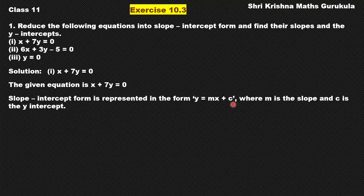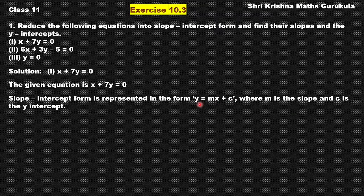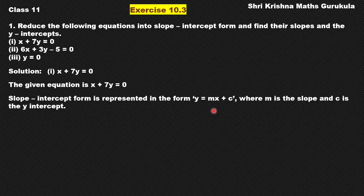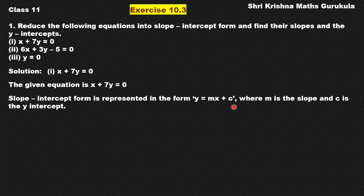If you remember, I had already told you: if the constant term is 0, then the equation of the line would be y equals mx. That is, if the y-intercept is 0, the equation is y equals mx, which means the line passes through the origin. In the slope-intercept form, only the y term is in the LHS and x with the constant — which is the y-intercept — will be in the RHS.